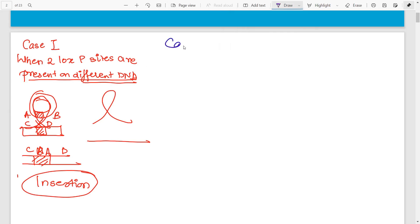What is Case 2? Case 2 is when the two LOXP sites are in the same DNA and in the same orientation or the same direction.